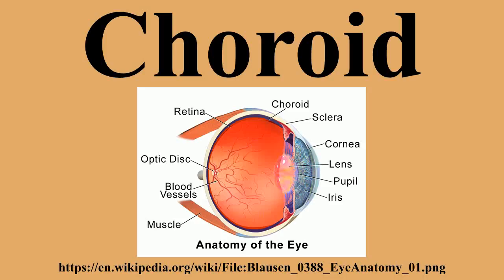The choroid, also known as the choroid coat, is the vascular layer of the eye, containing connective tissue, lying between the retina and the sclera. The human choroid is thickest at the far extreme rear of the eye, while in the outlying areas it narrows to 0.1 mm. The choroid provides oxygen and nourishment to the outer layers of the retina. Along with the ciliary body and iris, the choroid forms the uveal tract.